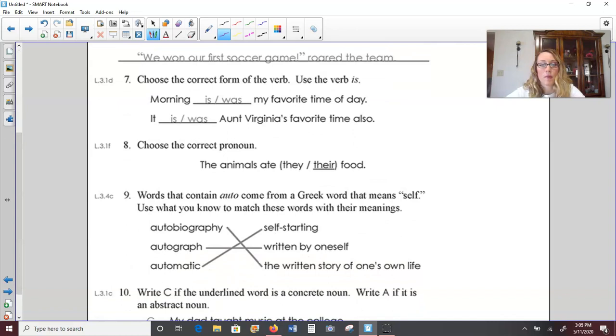Number six, add quotation marks. We're punctuating the dialogue. We won our first soccer game, roared the team. Quotation marks go around the exact words. So we're going to put quotation marks in front of we and after the exclamation mark in game because that is what the team is cheering or roaring. Number seven, choose the correct form of the verb using the verb is. Morning is my favorite time of day, or morning was my favorite time of day. So it can be past or present tense depending on how you are using it.